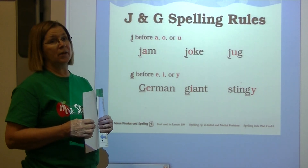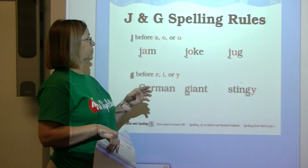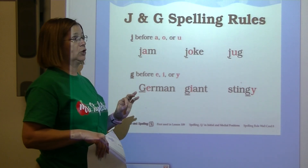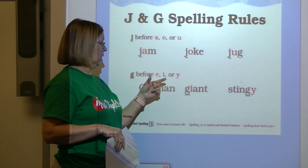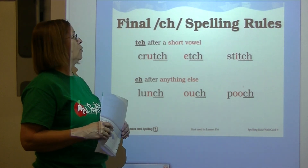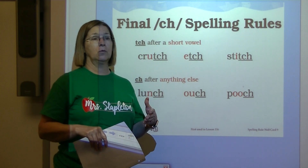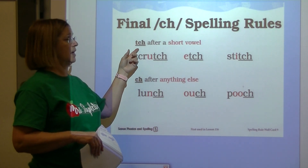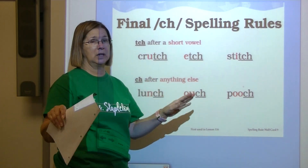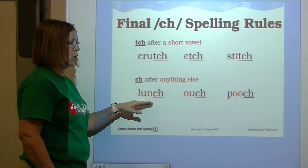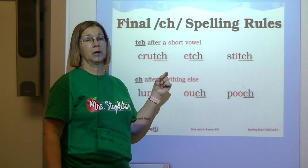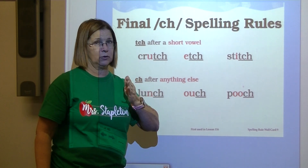The rules for spelling with the letters j and g: when we hear j, we use j if it comes before a, o, or u; when we hear j and it comes before e, i, or y, we use g. When spelling ch at the end of a word: use trigraph tch if it comes after a short vowel, but plain ch after anything else — long vowel, diagraph, consonant, whatever. The only time you use tch is right after a short vowel.